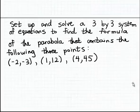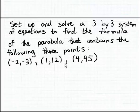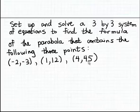In this example, we want to set up and solve a three by three system of equations to find the formula of the parabola that contains the following three points. The coordinates for those points are minus two and minus three for the first point, one and twelve for the second point, and four and forty-five for the third point.